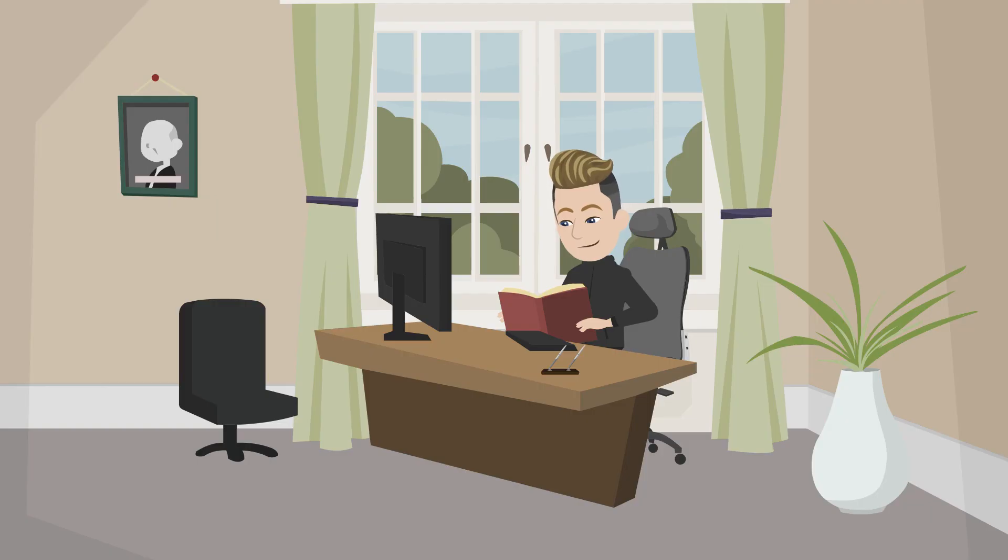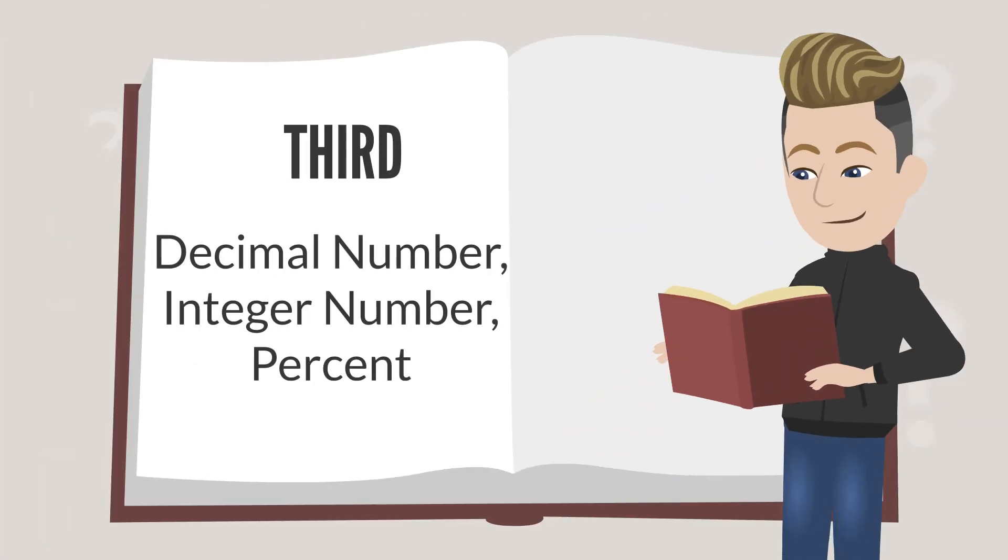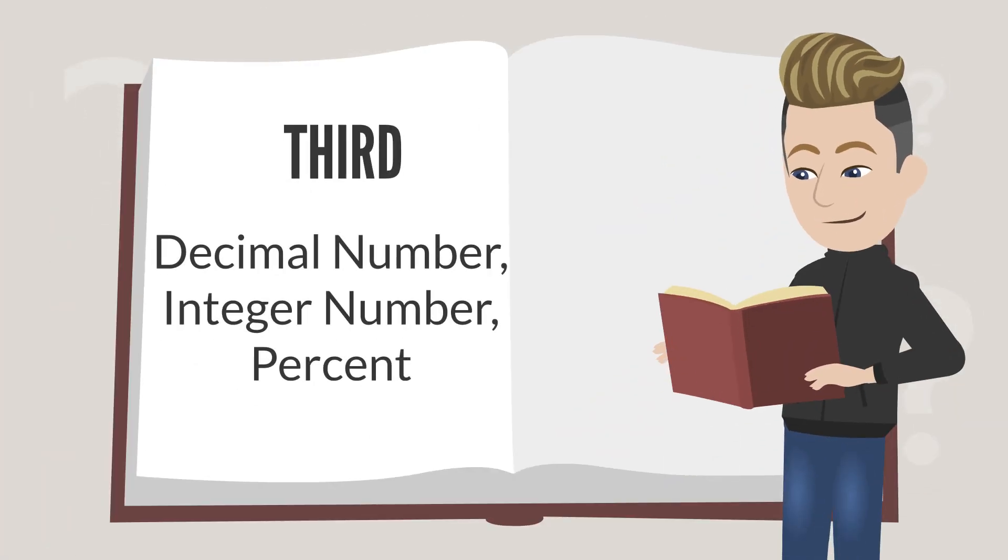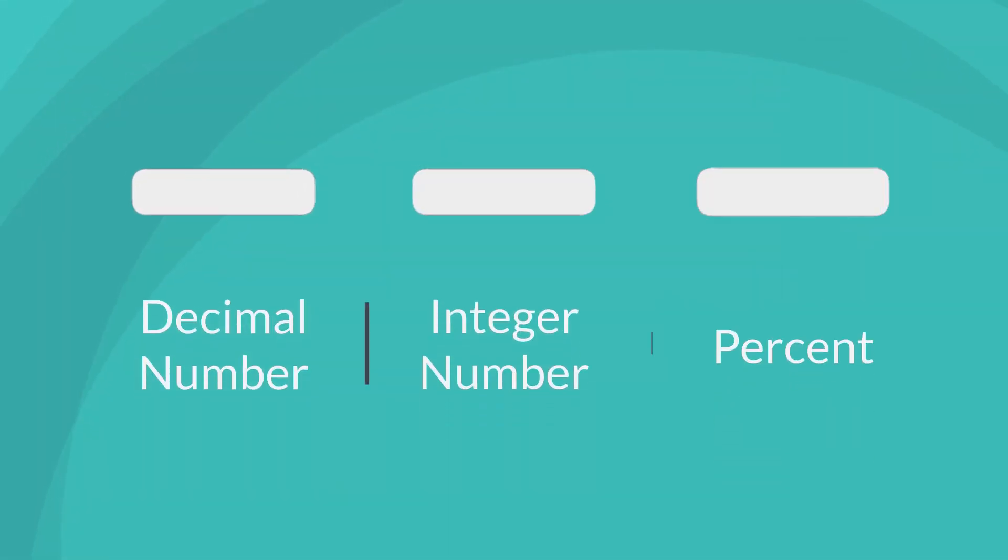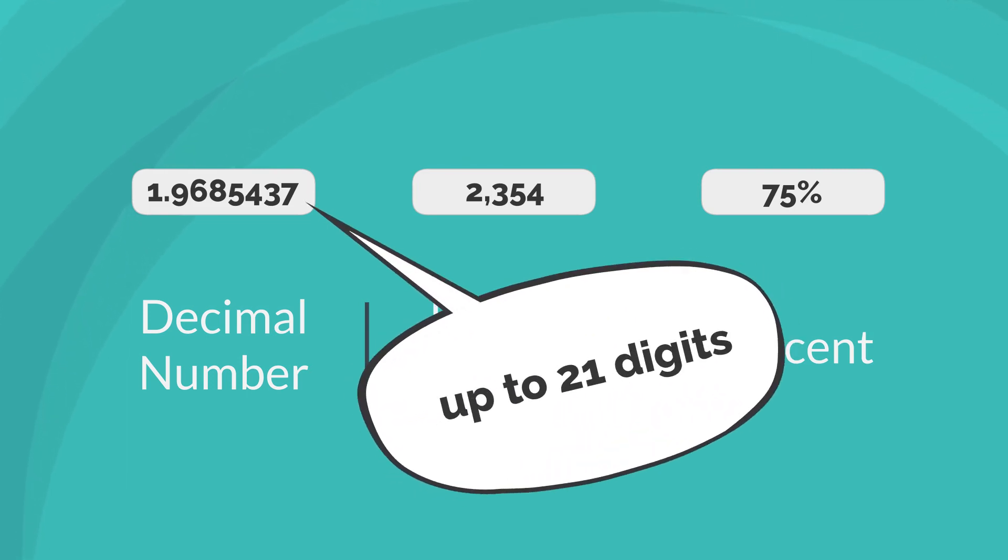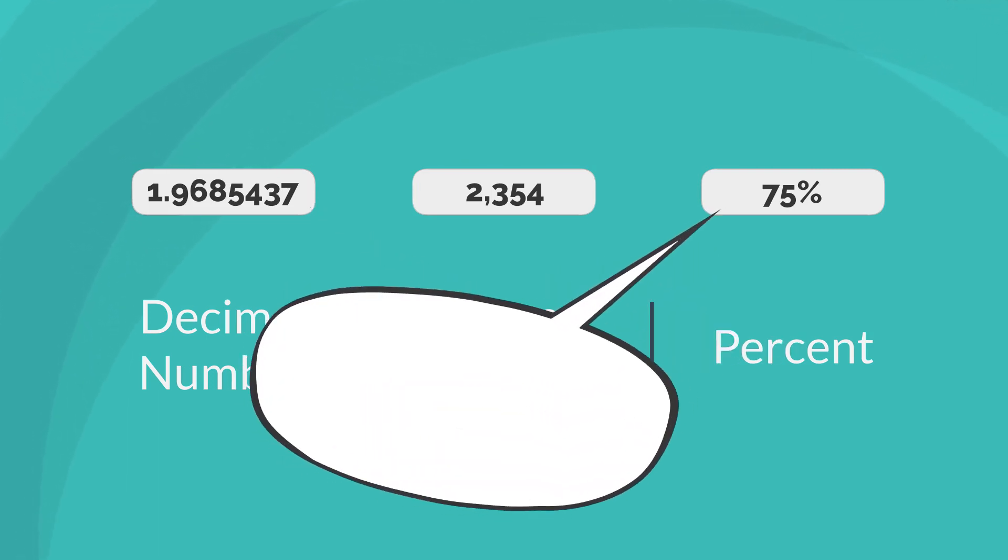A third confusing group includes the field types decimal number, integer number, and percent. While these three field types all involve numbers, their uses are self-explanatory. You should decide which one to use based on how you want any information in the fields to be formatted. Some things to note are that the decimal number field holds up to 21 digits, and that the percent field will automatically apply the percent symbol to numbers.